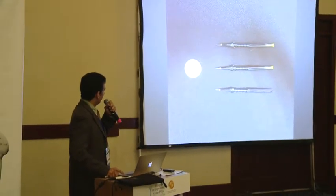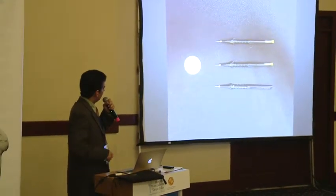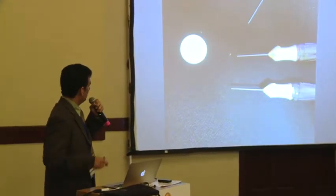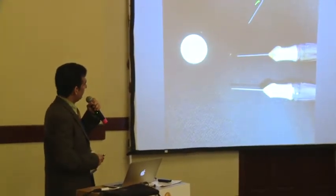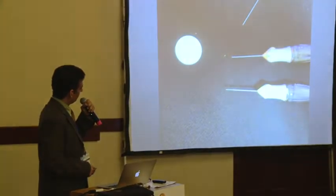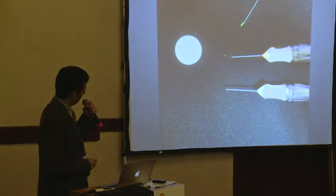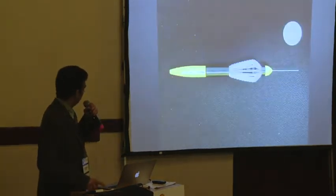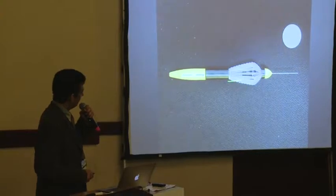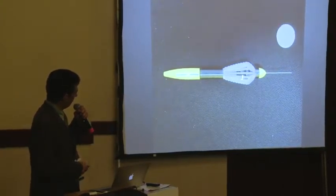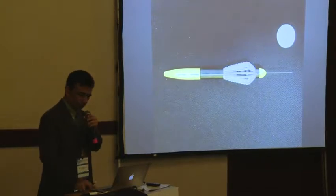Esto es para darse idea del tamaño de las puntas comparado con una moneda de un córdoba. Estos son los diferentes calibres: 25, 23 y 20. Estas son algunas de las pinzas que se usan para pelar membranas, etc. Tienen un mecanismo de resorte.